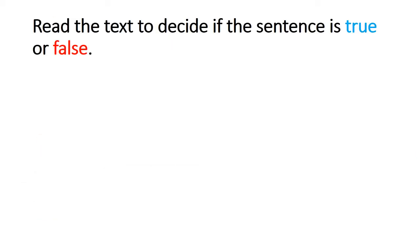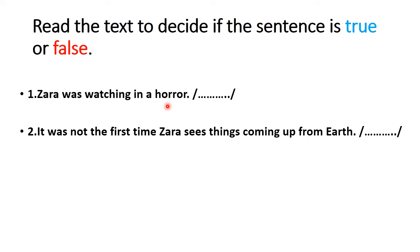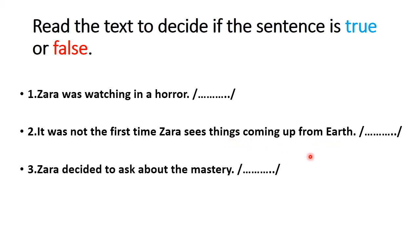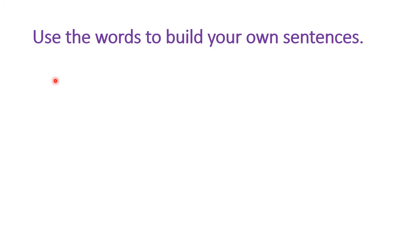Here is the homework. You have to read the text and then decide if each sentence is true or false. Number one: Zara was watching in horror — true or false? Number two: It was not the first time Zara sees things coming up from earth. Number three: Zara decided to ask about the mystery. And number four: Zara suddenly saw signals on the screen.